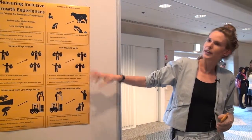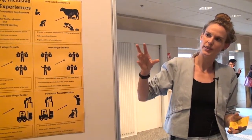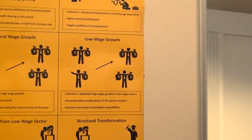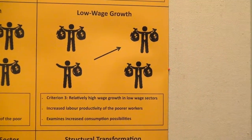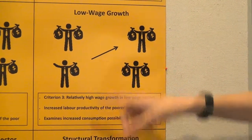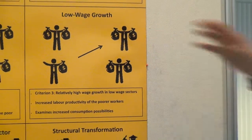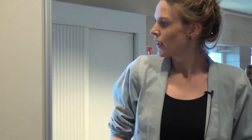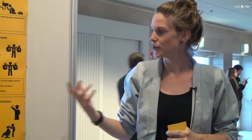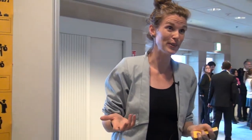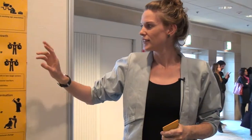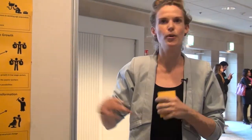We also look at the internal distribution within the workforce, saying that low-wage sectors should catch up with high-wage sectors. The wage growth in low-wage sectors should be higher than in high-wage sectors — just above and under average. As the agricultural sector is often the main low-wage sector, this criterion almost always looks at whether there has been increased agricultural productivity, which is often proposed as a way to reduce poverty.